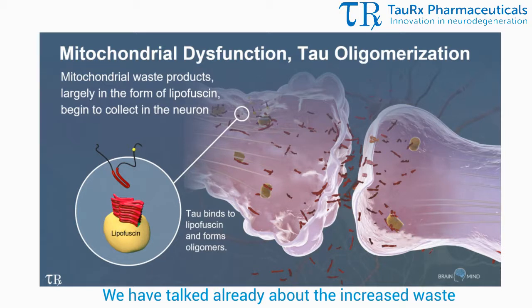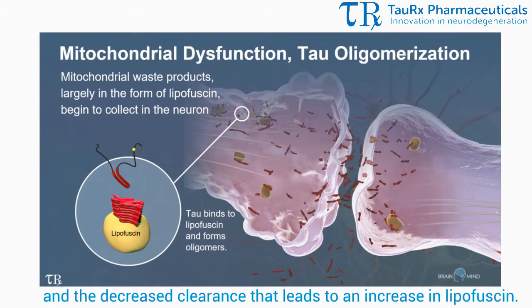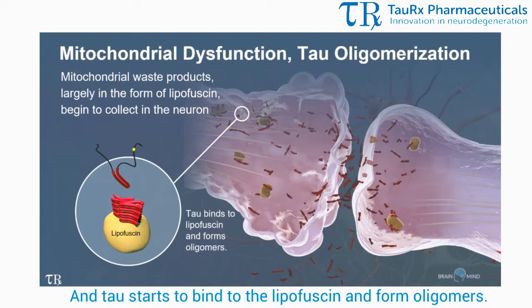We have talked already about the increased waste and the decreased clearance that leads to an increase in lipofuscin, and tau starts to bind to the lipofuscin and form oligomers.